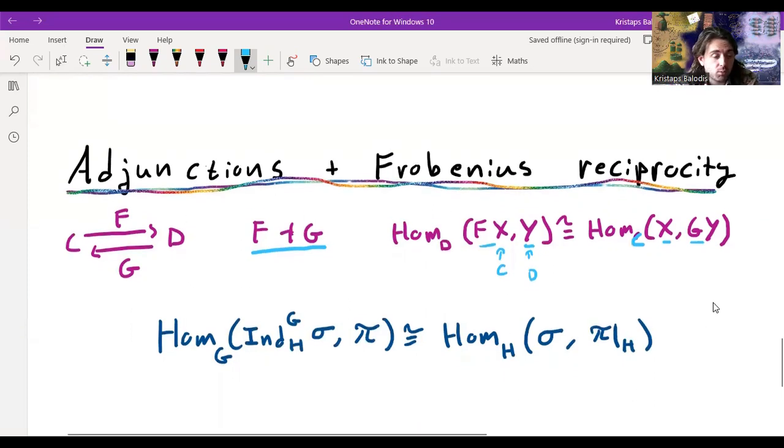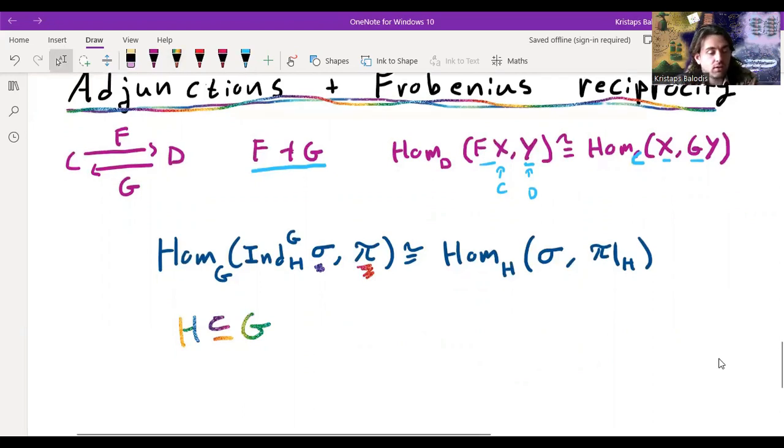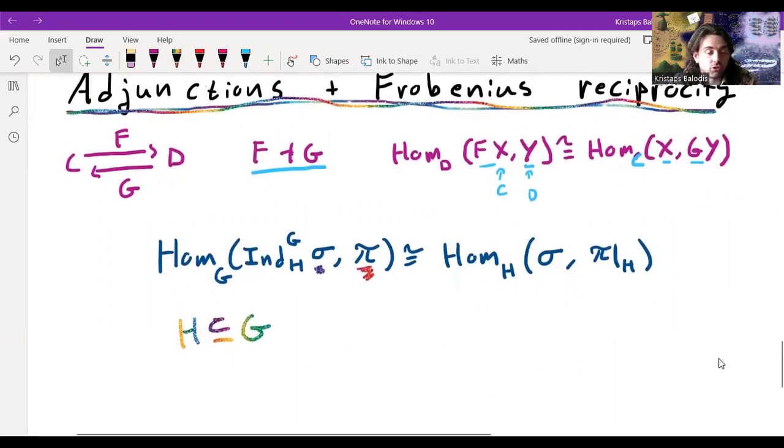And what I mean by naturally is that you have maps from X to X prime and Y to Y prime, and everything's compatible in every possible sense you would want it to be. Okay, so this is the definition of adjoint functors, comes up a lot of places in mathematics and is a useful concept. In particular, what I've written below here, this is what we call Frobenius reciprocity. So it's a particular instantiation of this. I'm imagining here that sigma is a representation of the group H, and pi is a representation of the group G.